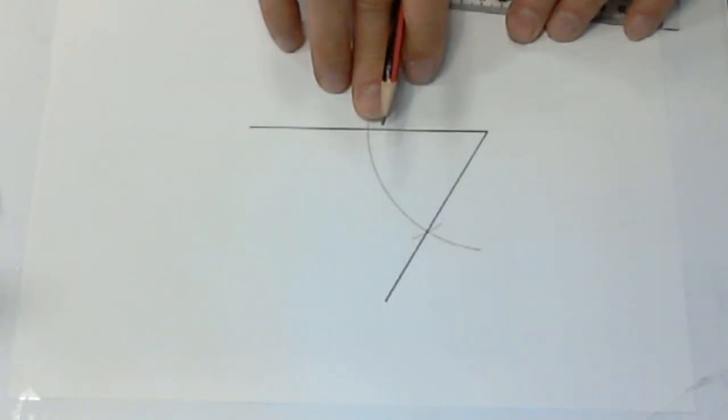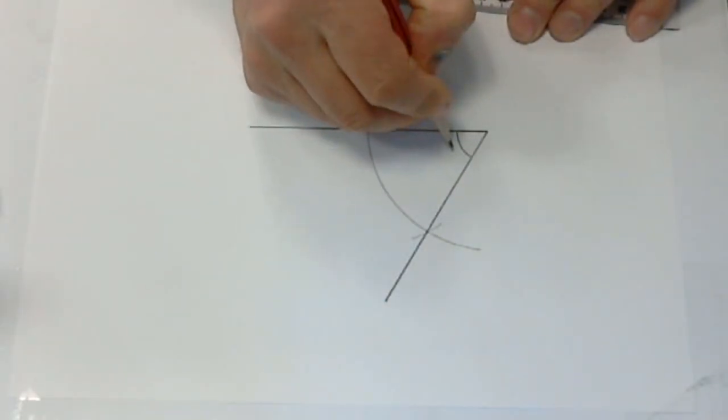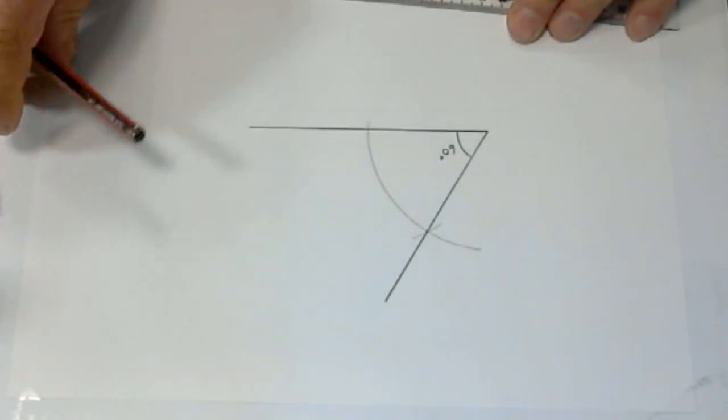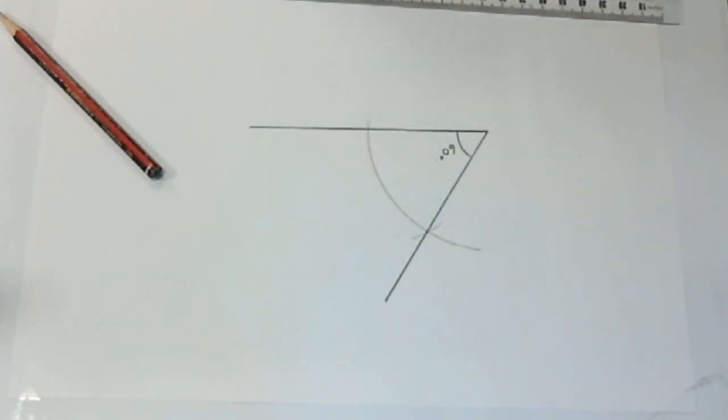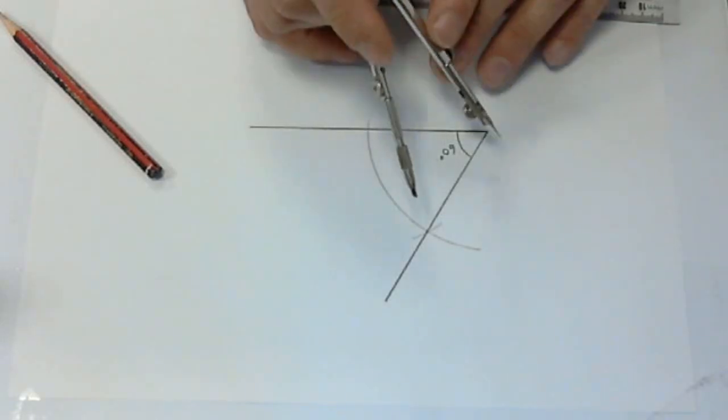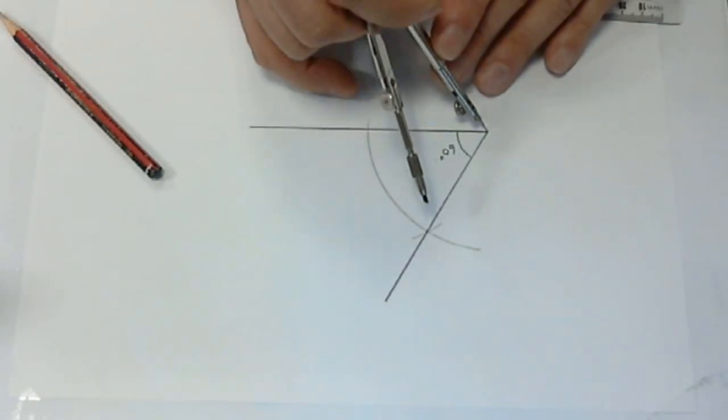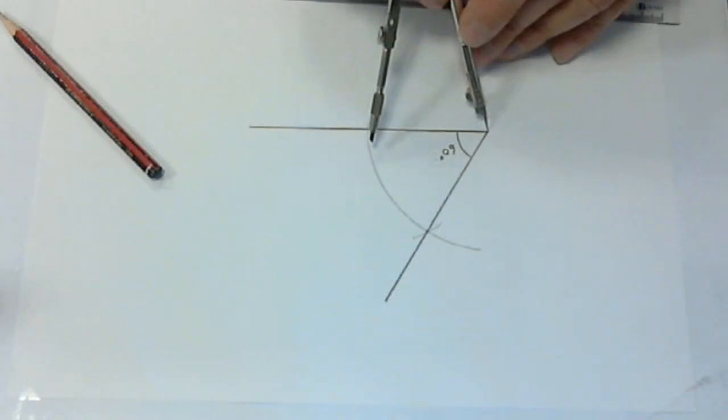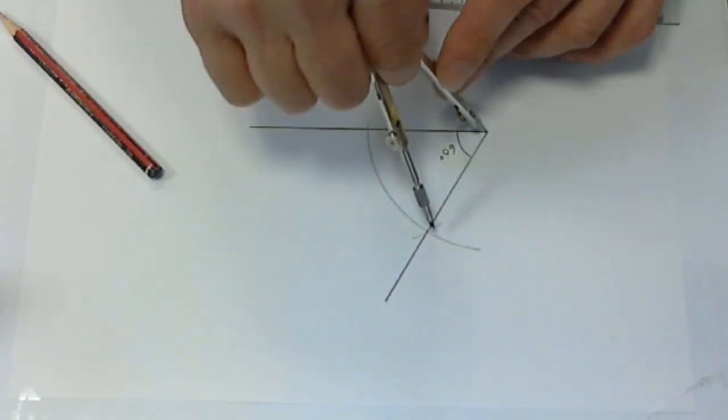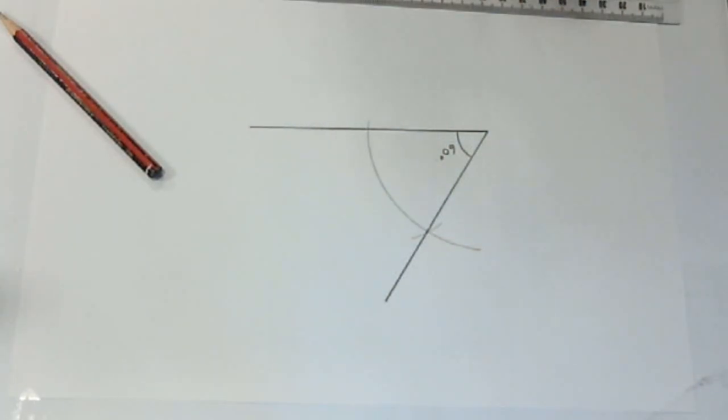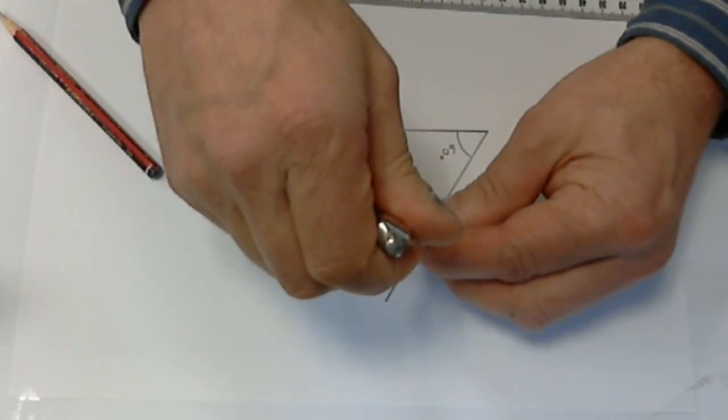Now to bisect that angle, we need a point that's equidistant from the start, which we already have from our original construction. Place the point of the compass there and draw an arc.